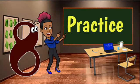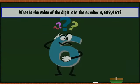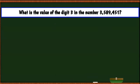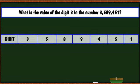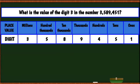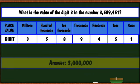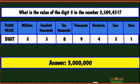Now let's move on to practice. What is the value of the digit three in the number? Using our place value chart, three is in the millions place, so its value is three million.